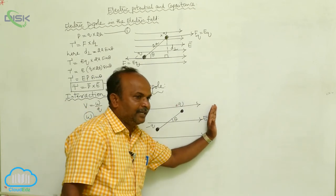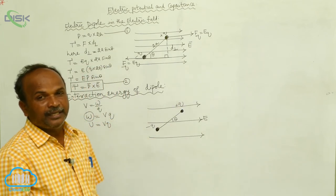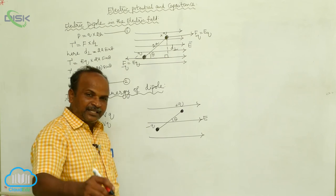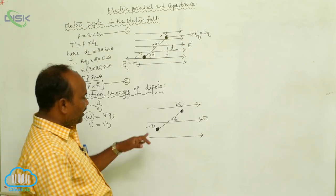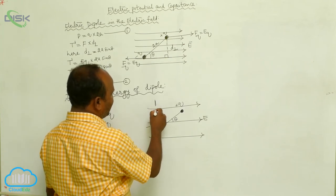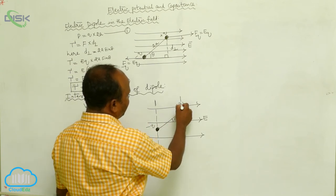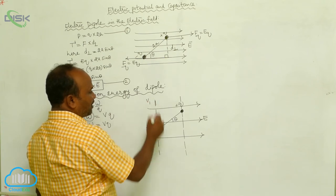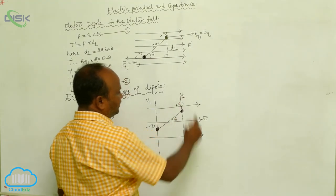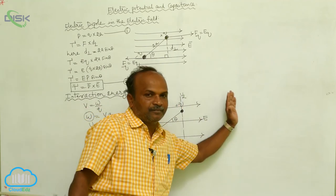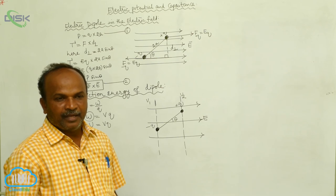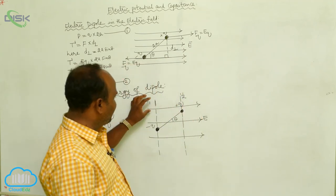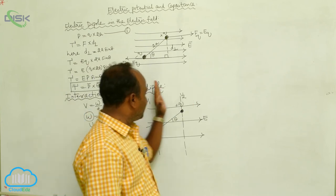When the electric field is as shown in the figure, we define equipotential surfaces. Equipotential surfaces are perpendicular to the electric field. At the negative charge the equipotential surface has potential V1, and at the positive charge the equipotential surface has potential V2. In the direction of the electric field, the potential decreases — therefore V1 is greater than V2.